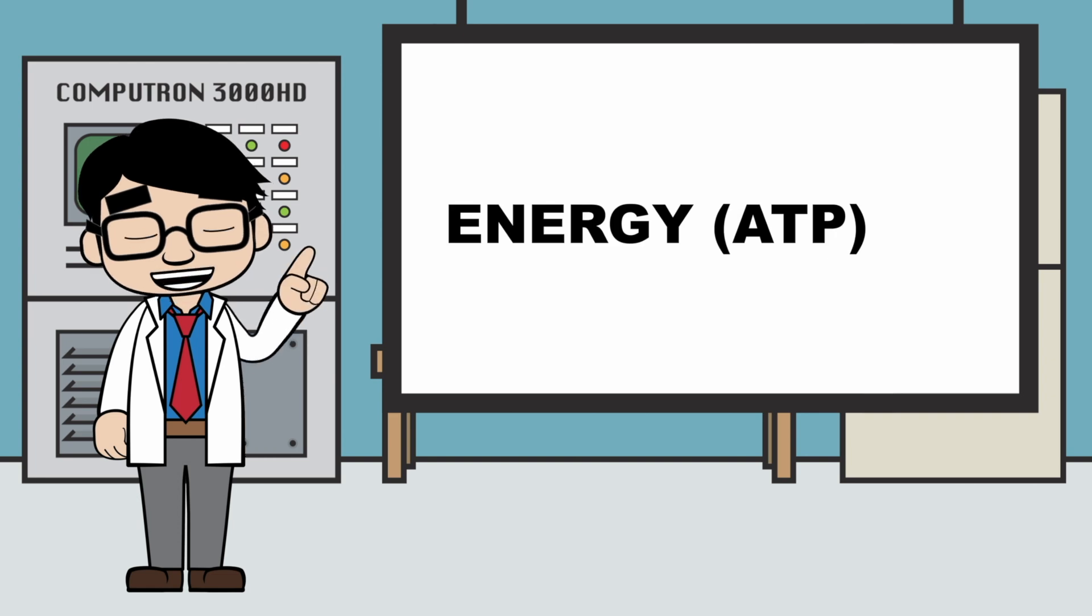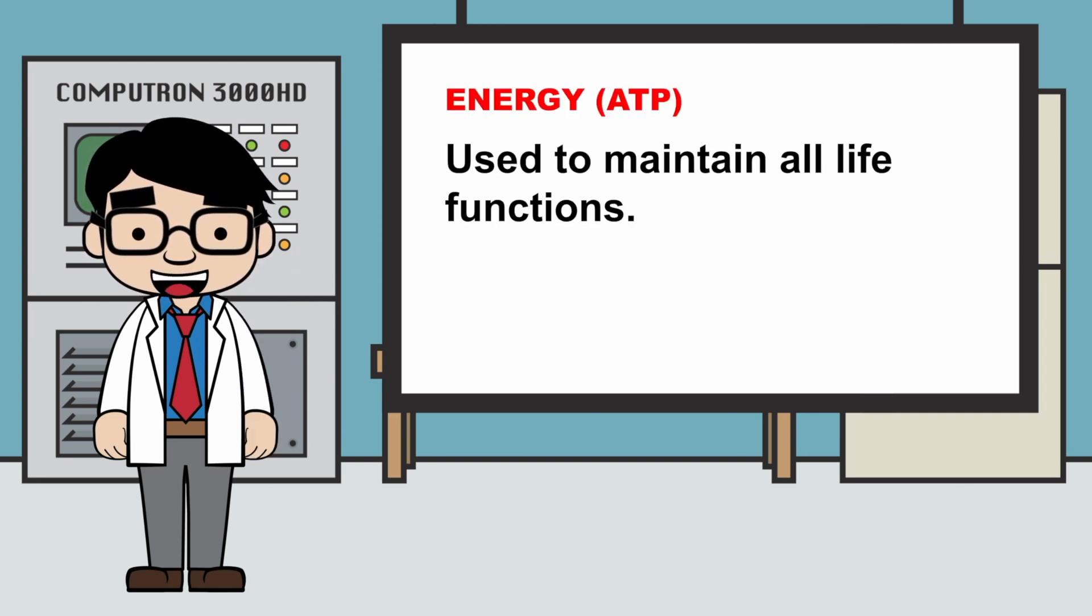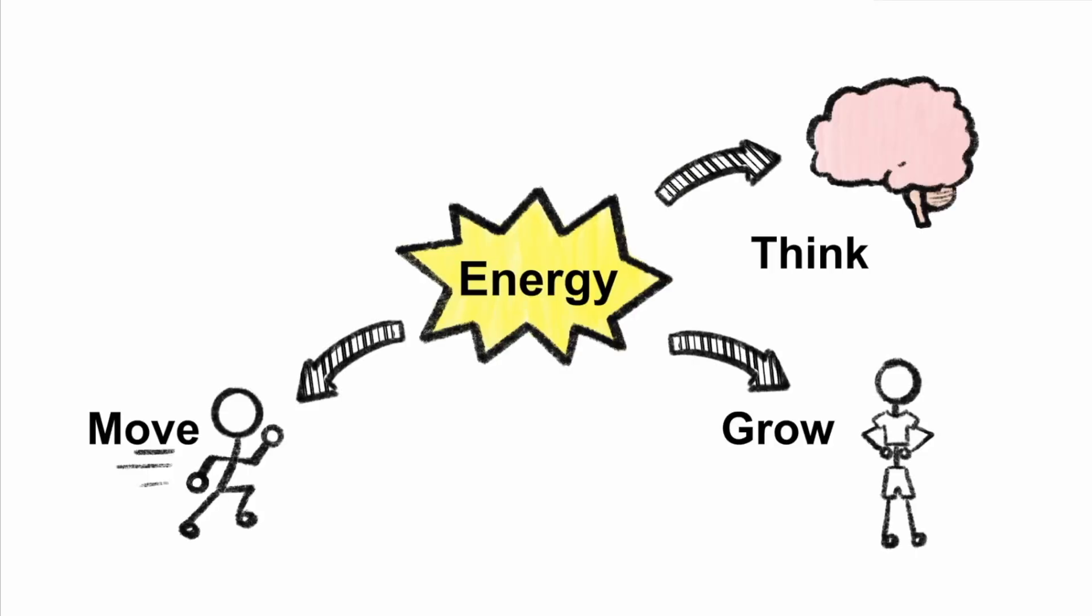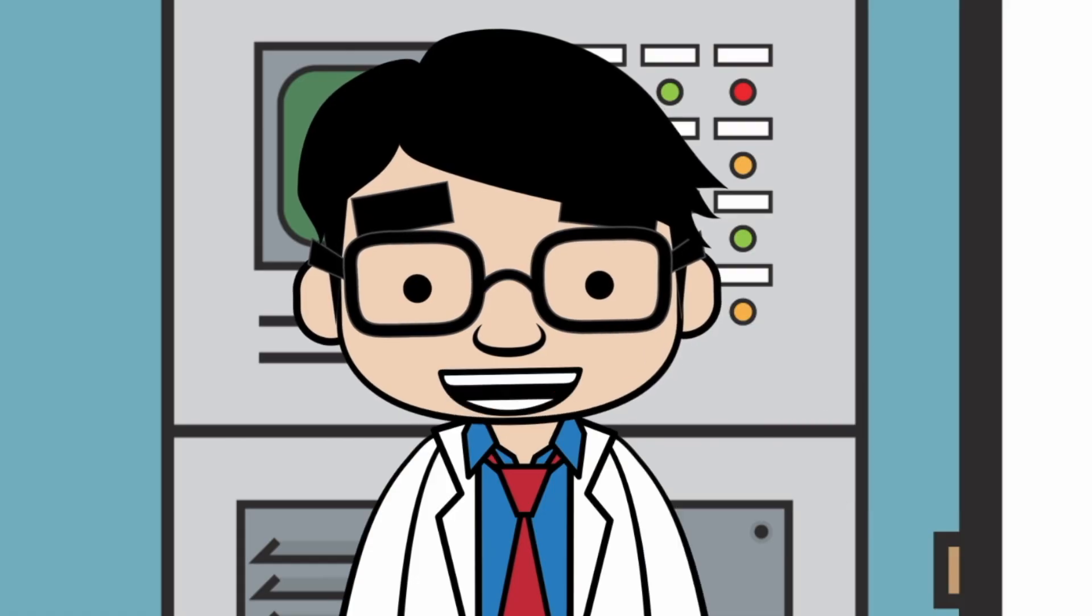Finally, let's talk about how energy is used. Energy in the form of ATP is used to maintain all life functions. Organisms can use energy to move, grow, think, repair, or reproduce.